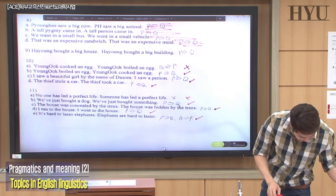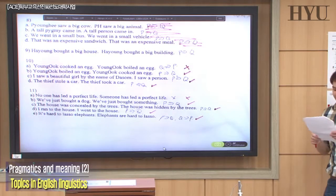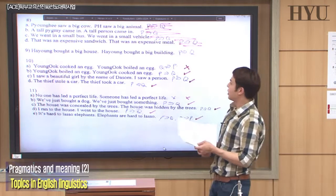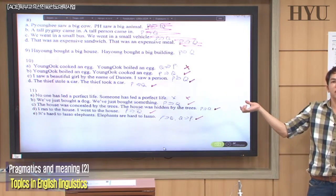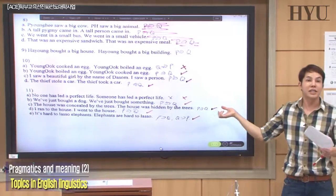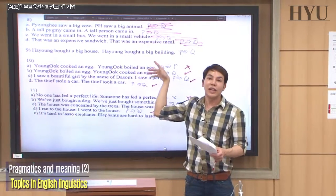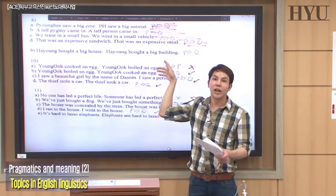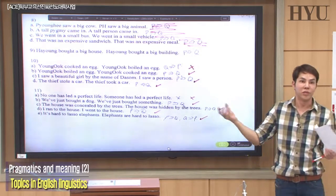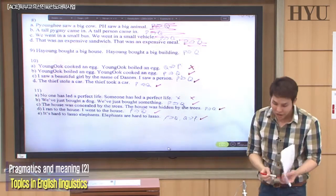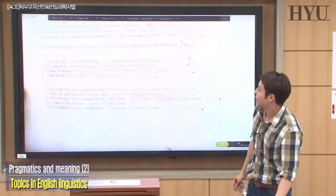Number nine: 'Hayoung bought a big house' and 'Hayoung bought a big building.' Does one entail the other? No, not necessarily — a house is not necessarily a building. It could be an apartment or just a room, for example. So no entailment relationship there.